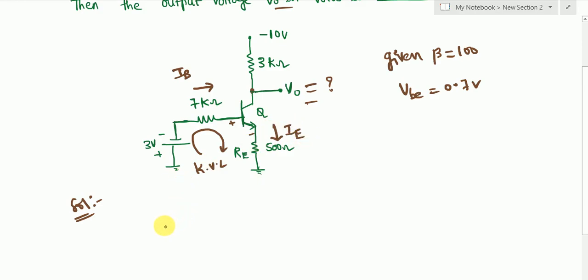So the KVL equation will be 3 + 7K·IB + VBE + 500Ω·IE = 0. Sum of potential in a loop equal to 0. ΣV = 0 is the KVL equation.